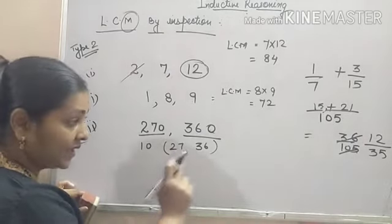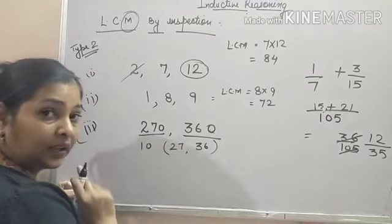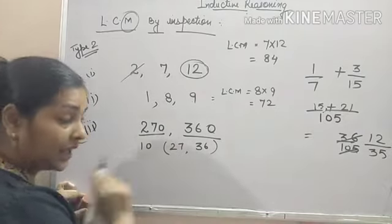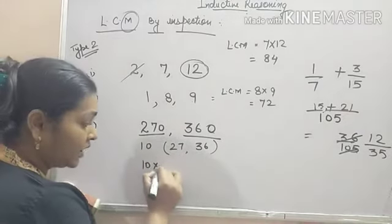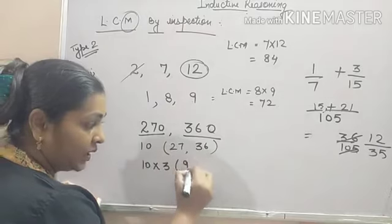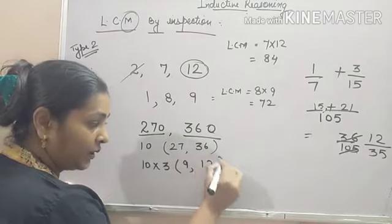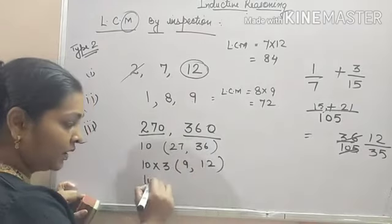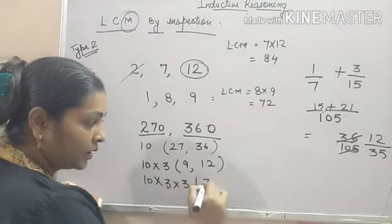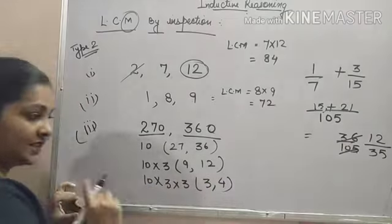3, 9's are 27 and when we divide 36 by 3, we get 12. So, take out 3 outside. What is left? 9 and 12. Again, 3 is common in them. Take it out. 3 and 4 is left.